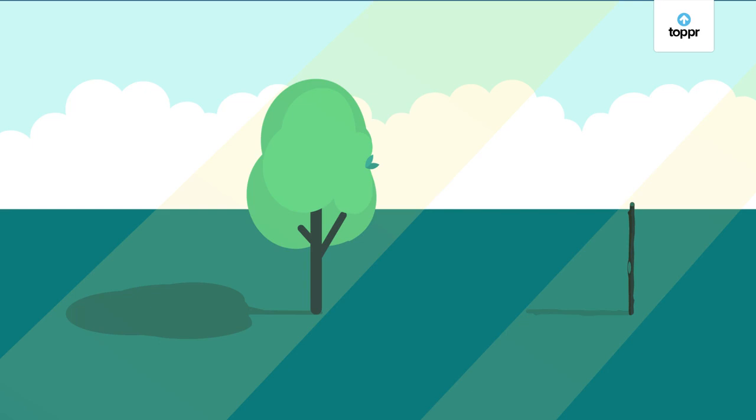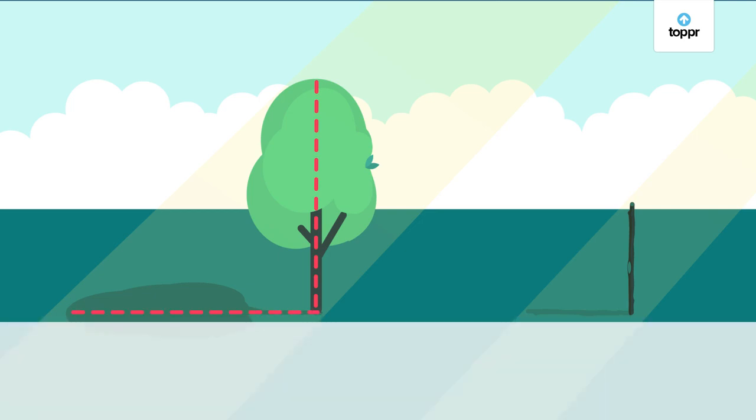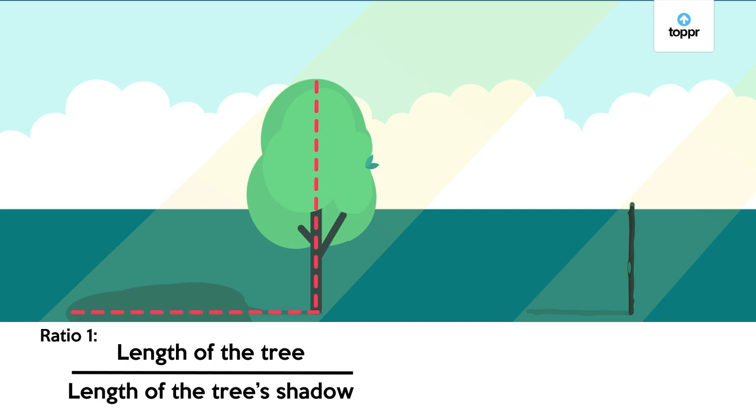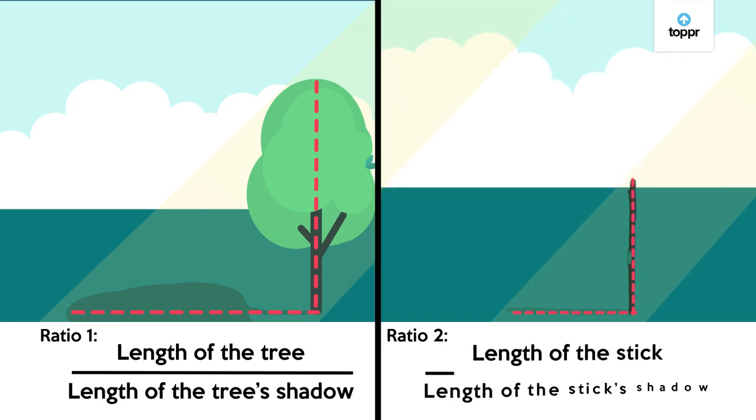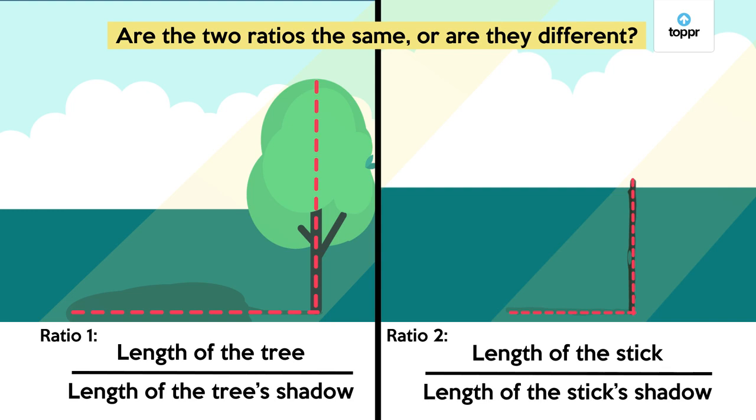Now suppose I find the height of the tree and compare it with the length of the shadow. I can get a single ratio from these two quantities. Then I can write another ratio for the stick as well. So we have two ratios now. What do you think? Would these two ratios be the same or would they be different?